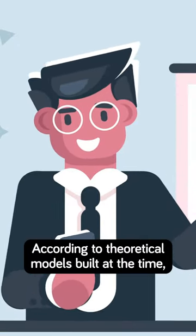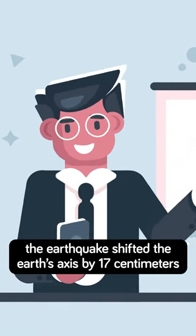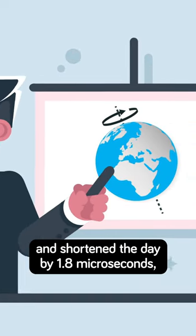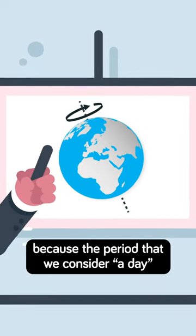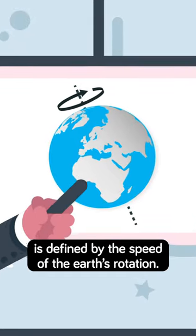According to theoretical models built at the time, the earthquake shifted the Earth's axis by 17 centimeters and shortened the day by 1.8 microseconds, because the period we consider a day is defined by the speed of the Earth's rotation.